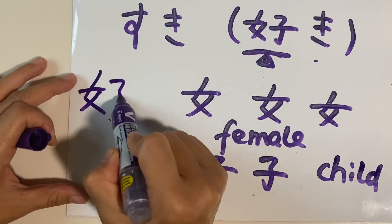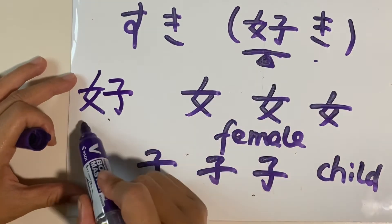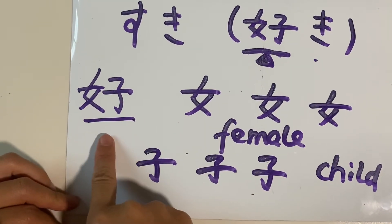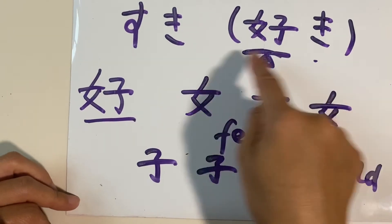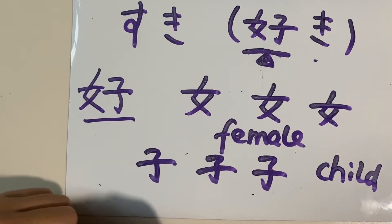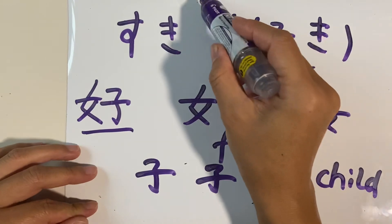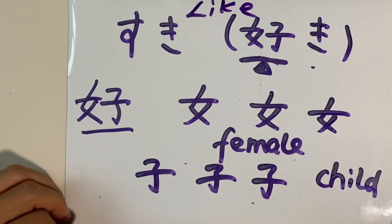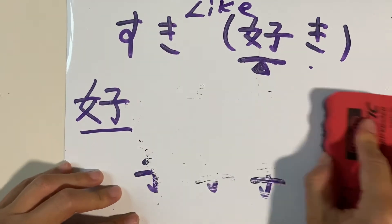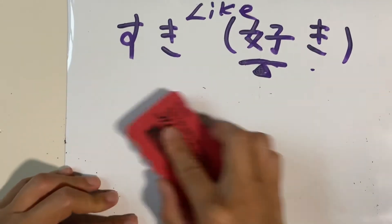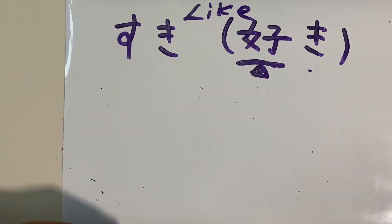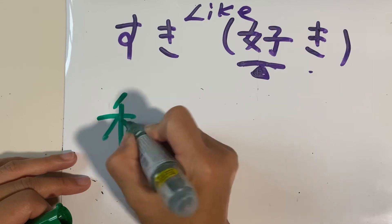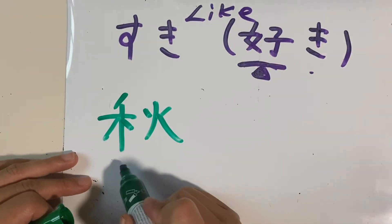Ki ko, ko is like child. So you put these two together, plus ki, suki. This in Chinese is actually means good, good. Suki, like. Suki. Ii desu ka? Suki, like.